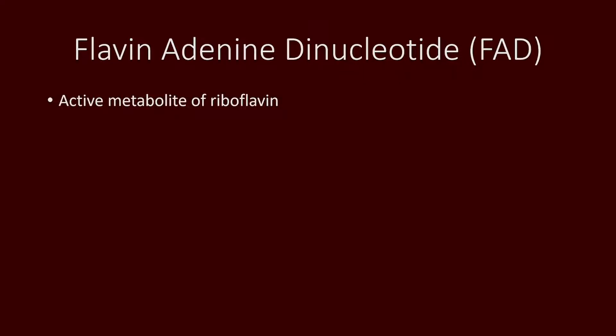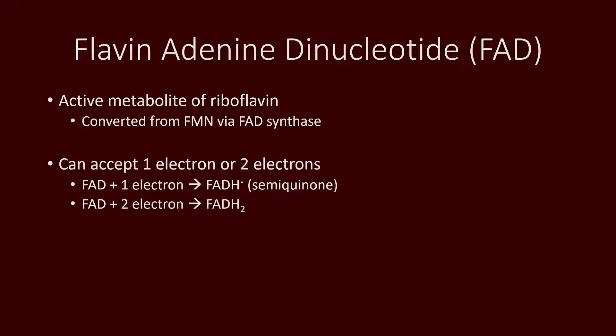Next is flavin adenine dinucleotide, or FAD. It is the second active metabolite of riboflavin, and we can convert it from FMN through the enzyme FAD synthase. Like FMN, it can also accept either one or two electrons, making it quite versatile as well. If it were to accept one electron, it turns into a radical — semiquinone — just like FMN.